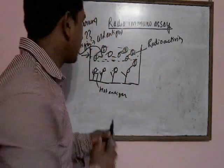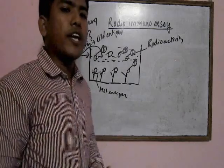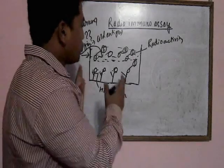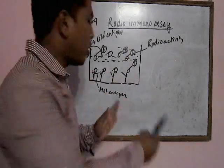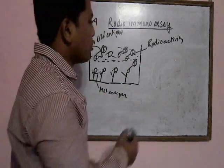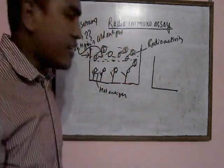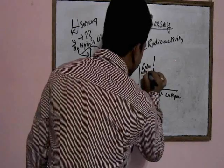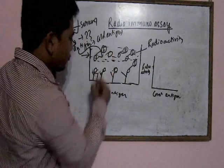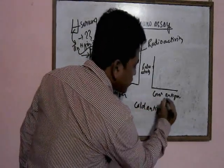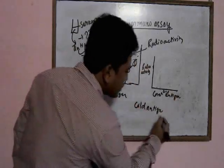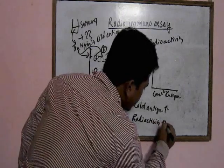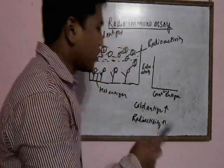We can detect the radioactivity of the sample components. To determine the concentration of the antigen in a given serum, we first perform a series of tests with known concentrations of the antigen. This is the concentration of the cold antigen on one axis and the radioactivity on the other. As we increase the concentration of cold antigen, the radioactivity increases.